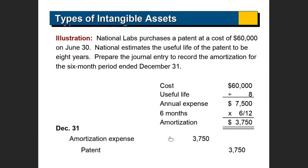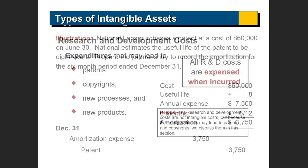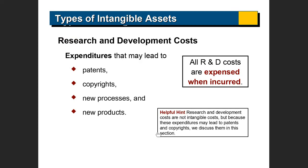There is no concept of salvage value and no other type of depreciation for intangibles — only straight line. Research and development related to patents, copyrights, or a new process or new product — any type of research and development cost is expensed. They're all expensed in the income statement; they don't go to the balance sheet.